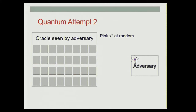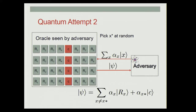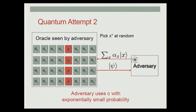Our second attempt is to make all queries answered in the same way. Instead of picking a query at random and answering it differently, we pick an input X* at random and answer that input differently. The adversary sends a superposition of X, and we send back a state where in response to X other than X*, we give R_X (random), and in response to X* we give back C. The problem is that we picked the input at random from an exponentially large domain, so the probability that the adversary uses the challenge C is exponentially small, and we are unable to use this technique to break our underlying problem.